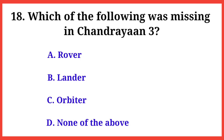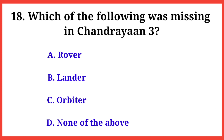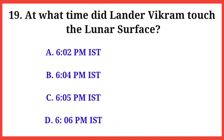Q18. Which of the following was missing in Chandrayaan-3? The right answer is option C: Orbiter.